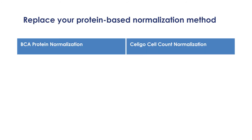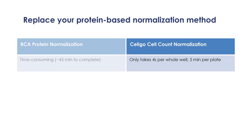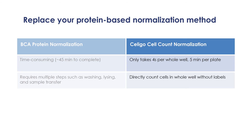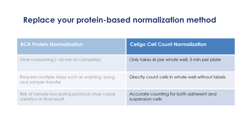In comparison to the BCA protein normalization method, the Soligo cell count normalization method only requires 5 minutes per plate. It can directly count cells in the whole well without labels for both adherent and suspension cells. Finally, it can improve cell count accuracy by excluding the post area.